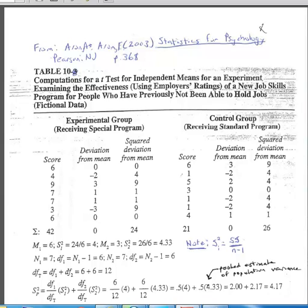This specific example looks at whether or not seven subjects in an experimental group differ significantly from seven subjects in a control group on a score that concerns employees' ratings of effectiveness. The null hypothesis is that subjects in the control group and subjects in the experimental group come from populations where the population means for employees' ratings on this variable are the same — that is, there is no difference in the means in the populations for the experimental or the control group.